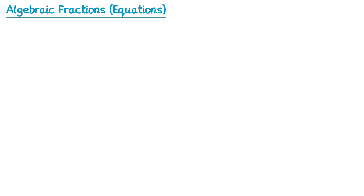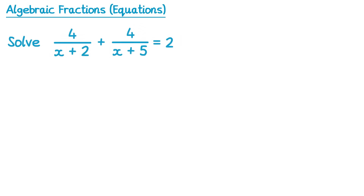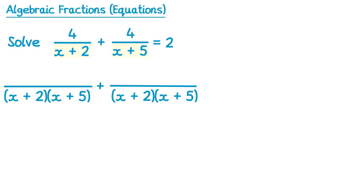Now let's increase the difficulty once more and have a look at this question. When we look at the denominators of these fractions, we can see they both have two terms. This means to find their lowest common multiple, we're going to need to multiply them together. So both of these fractions can be rewritten as something over x plus 2, x plus 5.